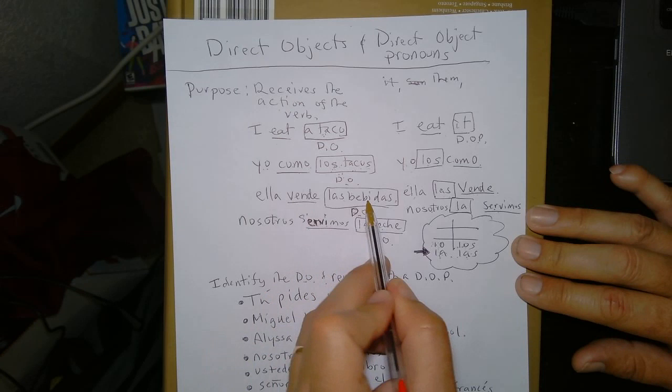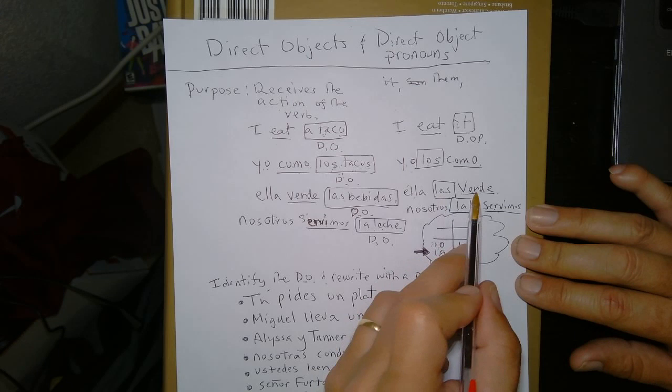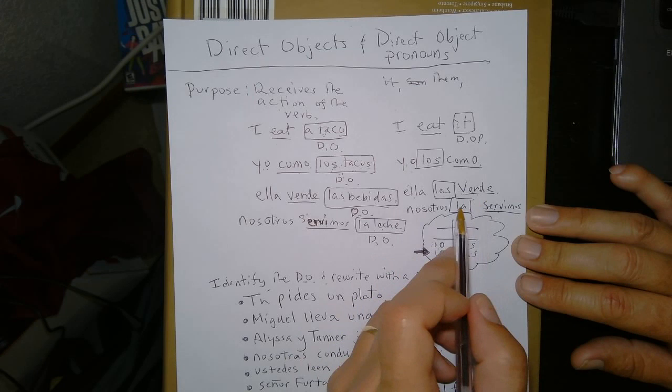Ella vende las bebidas. What do we replace las bebidas with? Las. And look where we put it. Right in front of the conjugated verb. Ella. Las. Vende.